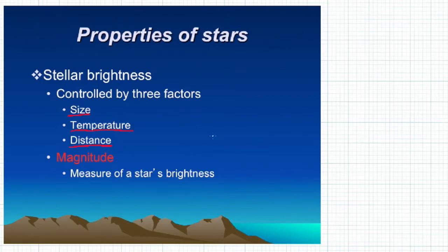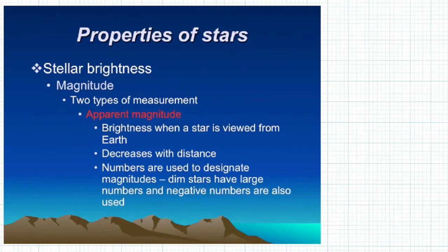This brings us to the idea of the magnitude of a star — that is, the magnitude of a star's brightness, or the amount of light it gives off. And there are two different ways to measure a star's magnitude.